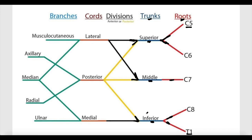These divisions, which are the third part of the brachial plexus, will combine, merge, or continue forward to form the next part of the brachial plexus, which are the cords. We have three cords in the brachial plexus: the lateral cord, the posterior cord, and the medial cord. Notice that the names of these cords are different from the names of the trunks, which were named based on their location — superior, middle, and inferior.